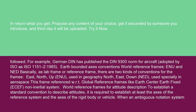Earth-bounded axis conventions define world reference frames. ENU and NED are used basically as a lab frame or reference frame. There are two kinds of conventions: East-North-Up (ENU), used in geography, and North-East-Down (NED), used especially in aerospace. This frame is referenced with respect to global reference frames like Earth Center Earth Fixed (ECEF), a non-inertial system.